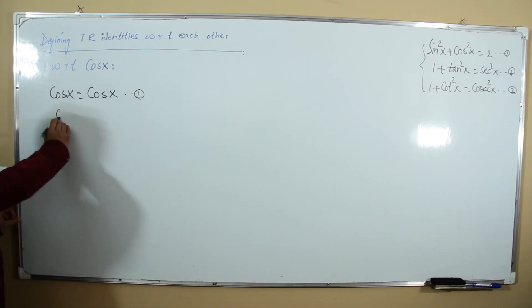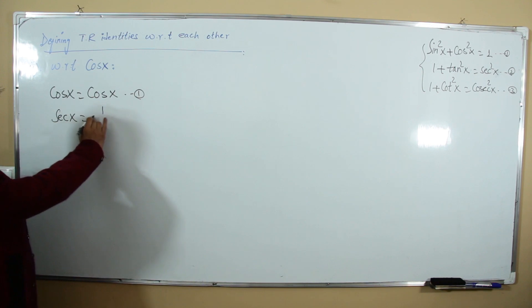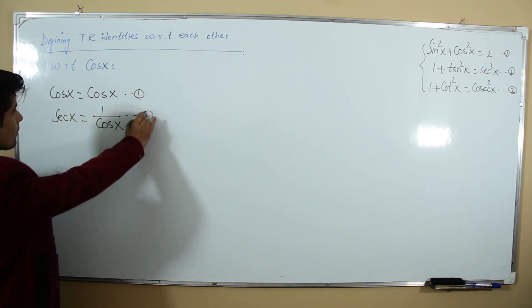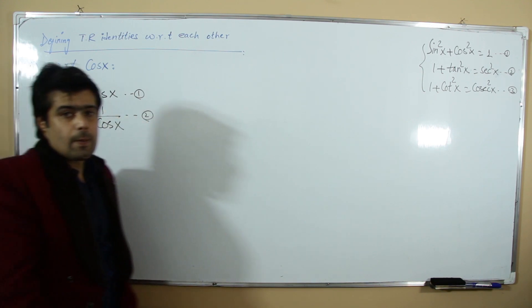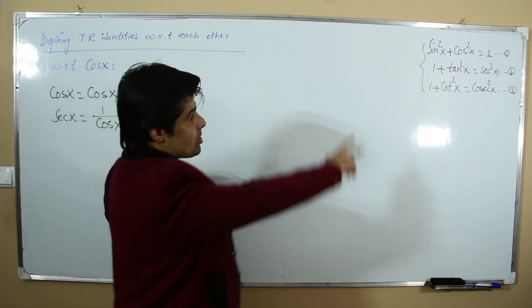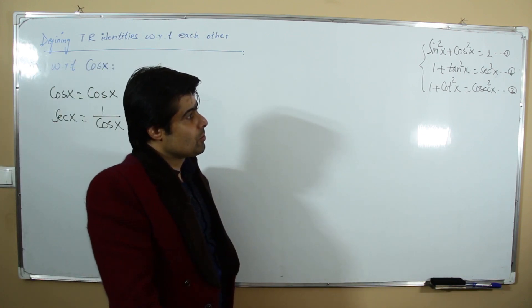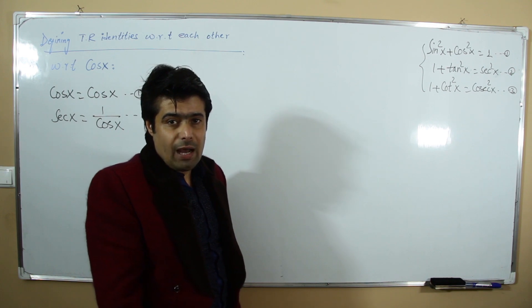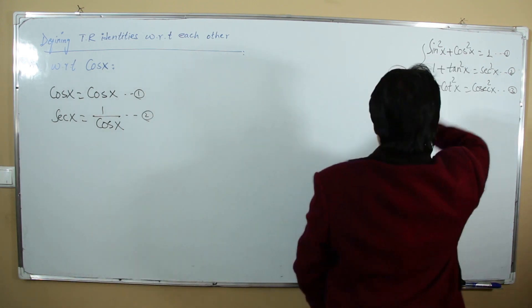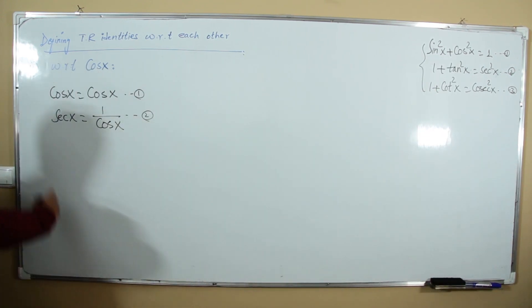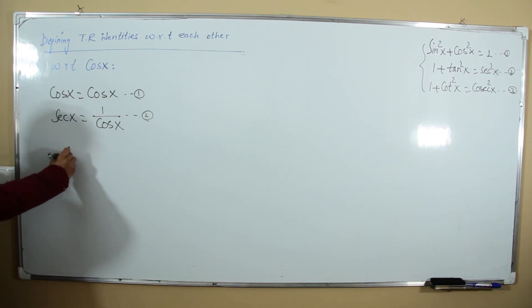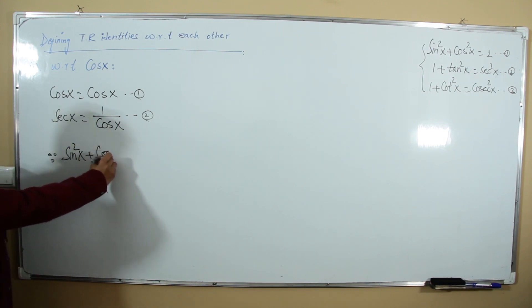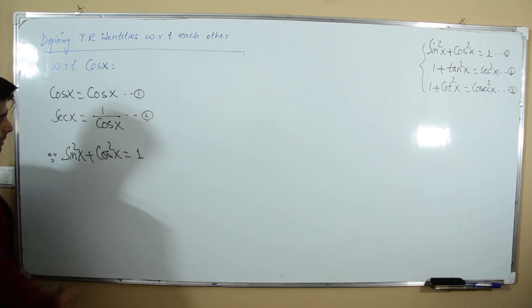The ratio related to cosine is secant. Secant x = 1/cos x. This is our second relation. Using the identity sin²x + cos²x = 1, we get the first identity.